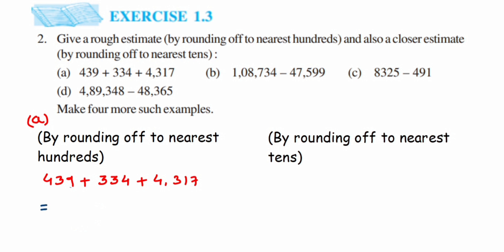For 334, it lies between 300 and 400 but is closer to 300, so it rounds to 300. For 4317, we check 317 — it lies between 300 and 400 but is closer to 300, so 4317 rounds to 4300. Now adding: 400 + 300 + 4300 = 5000.